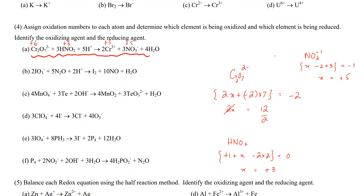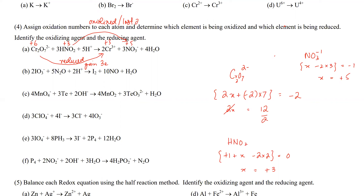So all I need to figure out is who's getting oxidized and who's getting reduced. Cr goes from plus 6 to plus 3, so that means it's getting reduced — it's gaining electrons. What is plus 6 to plus 3? That is 3 electrons gained. And N is getting oxidized — it's going from plus 3 to plus 5, so it lost 2 electrons.